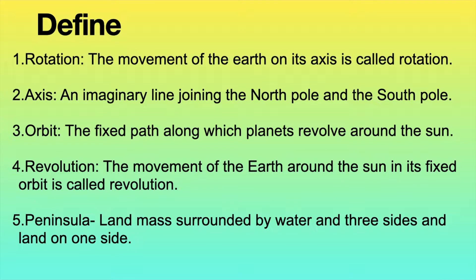Orbit: the fixed path along which planets revolve around the Sun. Revolution: the movement of the Earth around the Sun in its fixed orbit is called revolution.